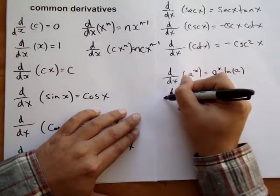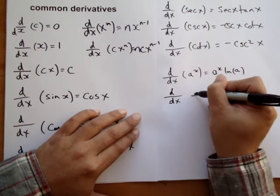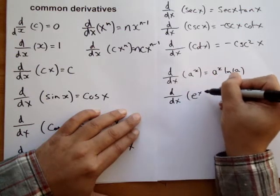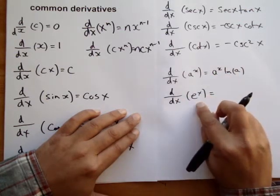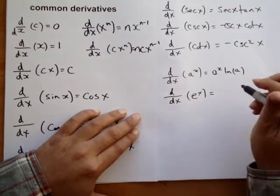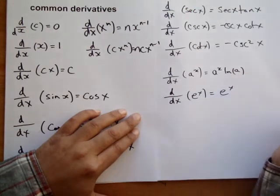The derivative of e to the x, e being Euler's number or Euler's number, is always e to the x.